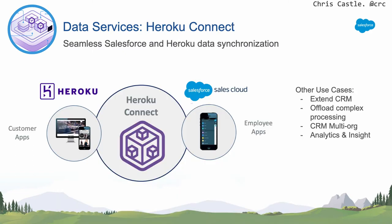Then there's Heroku Connect, which might be the most interesting if you're an existing Salesforce developer or doing integrations with Salesforce CRM data. Heroku Connect synchronizes your Salesforce CRM data with a Heroku Postgres database, so you have SQL access to all the data in the objects and fields within Salesforce — without making API requests out to Salesforce. You can create things like a customer-facing app personalized with your customer's CRM data. Use cases include multi-org synchronization and analytics and insight.